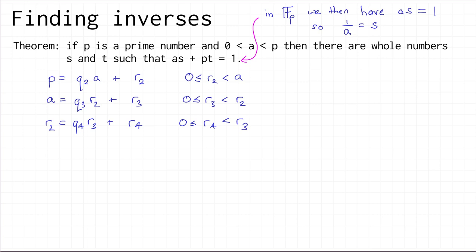Look at these numbers r2, r3, r4. They're all non-negative — all greater than or equal to zero. But a was bigger than r2, r2 was bigger than r3, and r3 was bigger than r4. So these numbers are getting smaller and smaller but always non-negative. Eventually one of these remainders must be zero because they're strictly decreasing — so if you do this for enough steps, you must eventually get to zero.